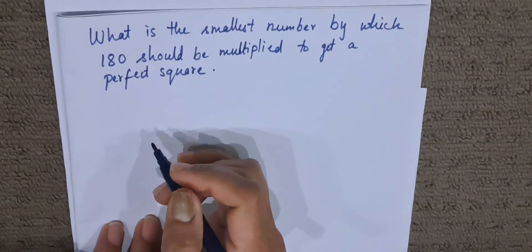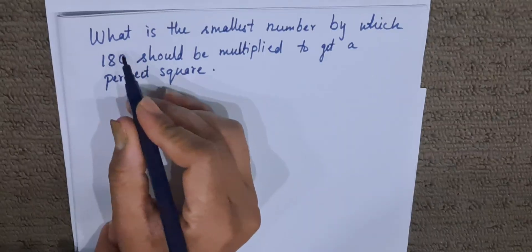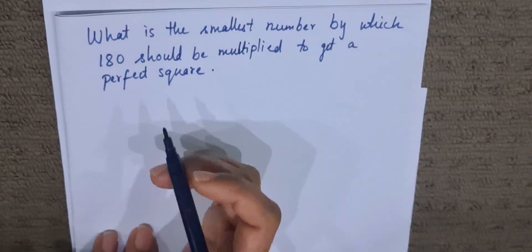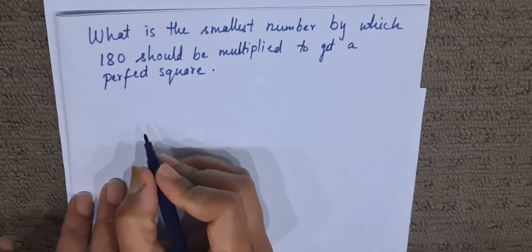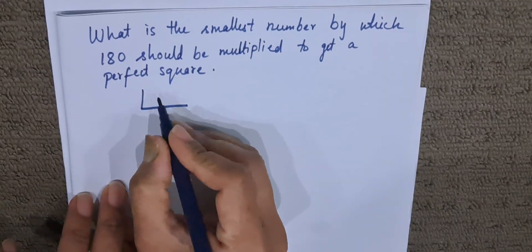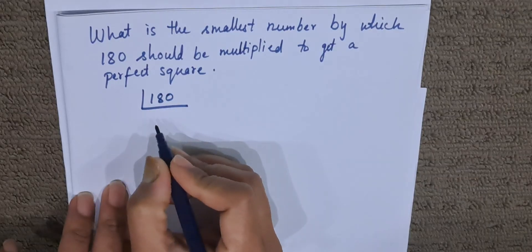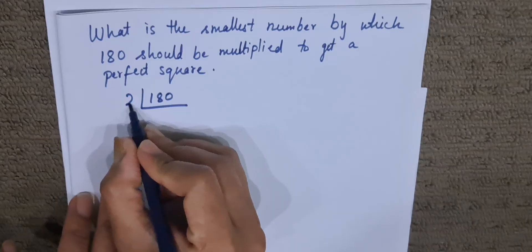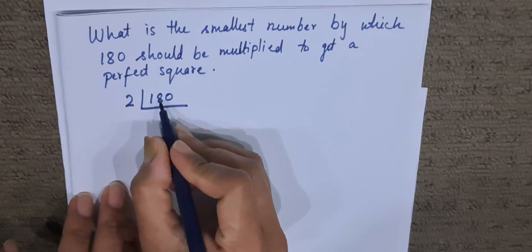Now we all know that 180 is not a perfect square. So to make this a perfect square, we have to multiply 180 with some number. We have to find out that number. In these types of sums, we have to start with prime factorization method. We will factorize 180 with the smallest prime number. 2 is the smallest prime number.